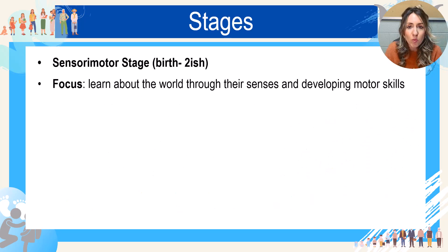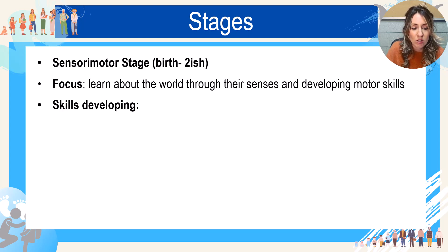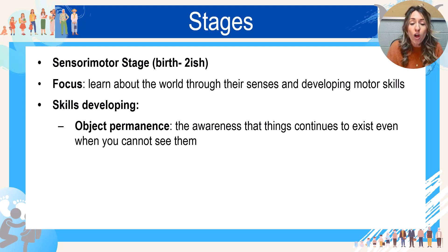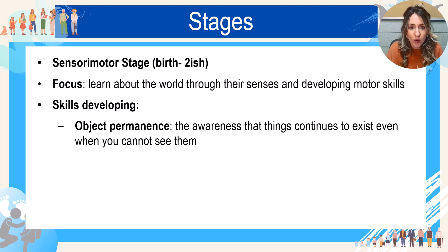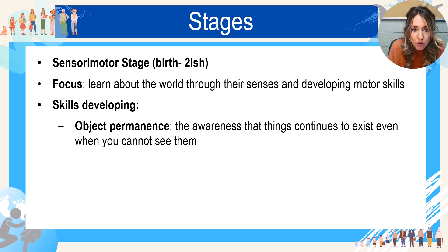The first stage is the sensorimotor stage — it's exactly what it sounds like. In their understanding of the world as they grow, they're using their senses: everything goes in their mouth, they want to touch and grab everything, smell it. They're also developing their motor skills — learning to move their arms, legs, roll, sit, and stand. One major cognitive skill being developed during this time is object permanence. When you're little and something is removed from you, you actually think it's gone — you don't know that a toy still exists if it's taken away. A great example: a toddler grabs the remote control, and at a certain age the parent can just hide it and the kid moves on. But once they have object permanence, they know you took the remote and they will go looking for it.